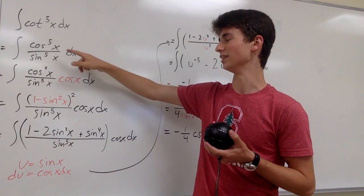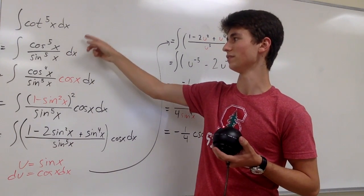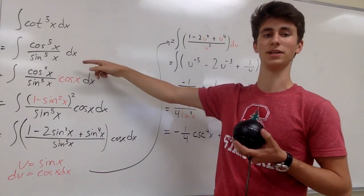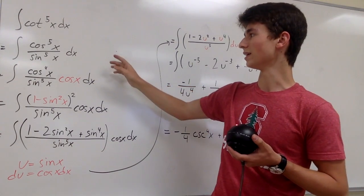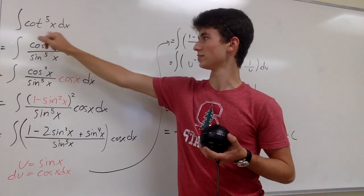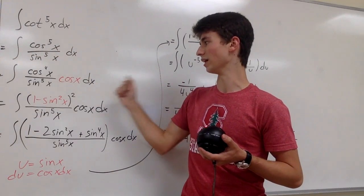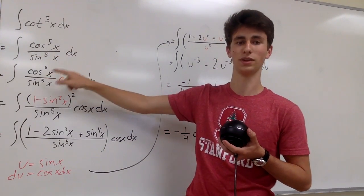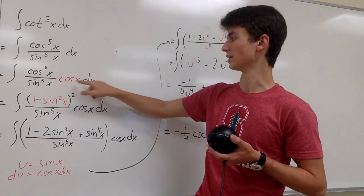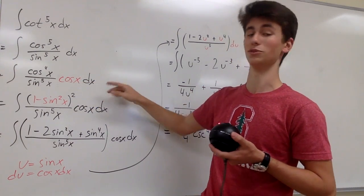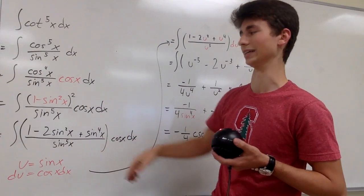So first thing we're going to do is split the cotangent to the fifth into cosine to the fifth divided by sine to the fifth. And then we're going to take one of these cosine to the fifths and bring it out and have cosine to the fourth x over sine to the fifth x times cosine x dx. And this is for the u substitution that we're going to do a little later.